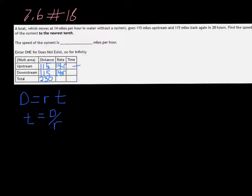For time, since we already solved for t, it's distance over rate. That's going to be 115 over 14 minus r, and this one will be 115 over 14 plus r. The total time was 28 hours.